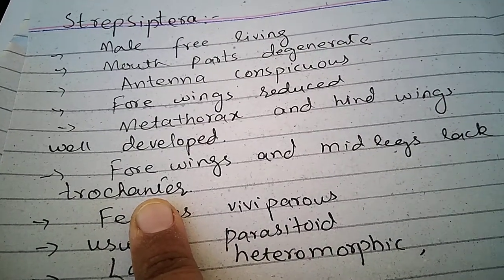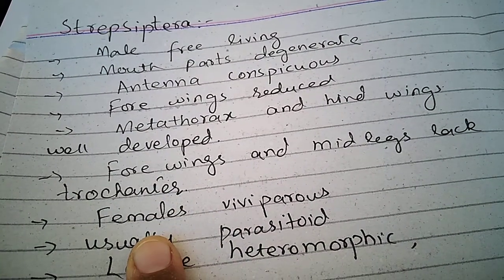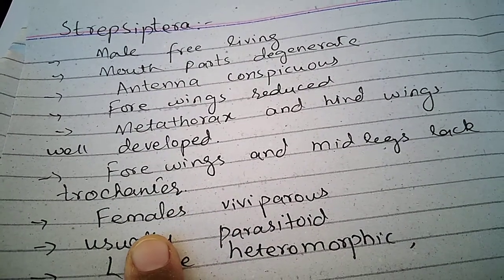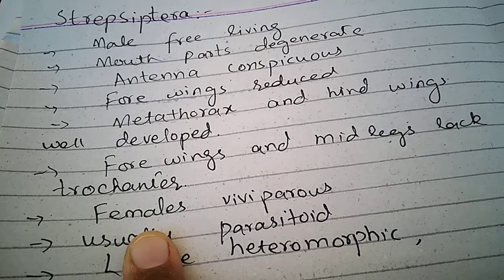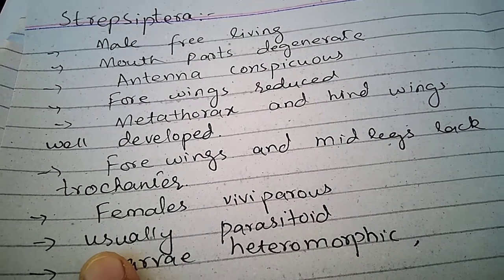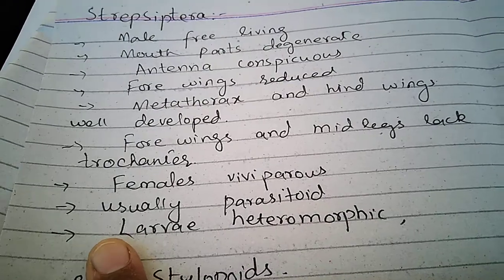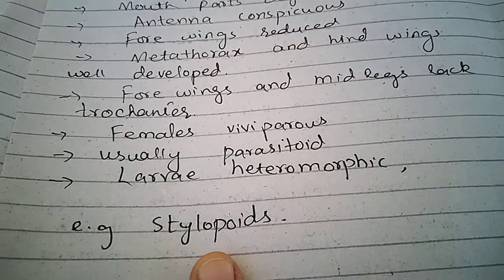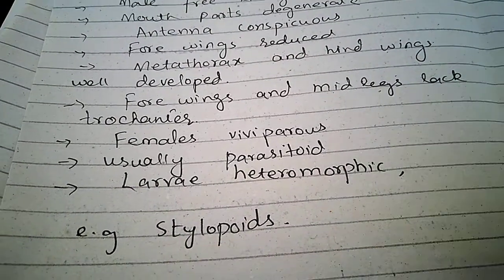This is the segment of the leg. Females are viviparous — they give birth to young worms or larval forms. They are usually parasites. Larvae are heteromorphic. Examples are the stylopoids.